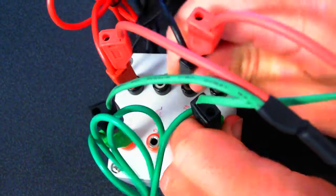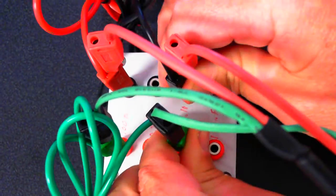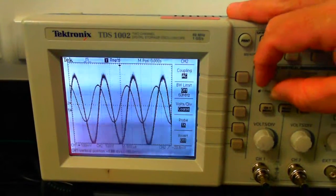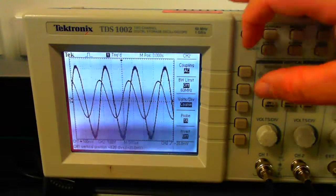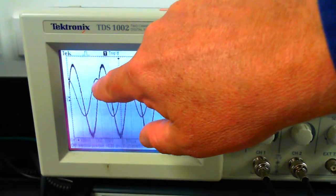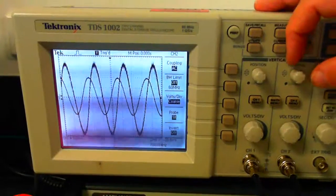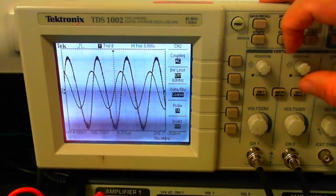If I move the probes across an inductor, again, I'll move channel 1, which is the current. And you can see that the voltage peak happens before the current peak. Therefore, voltage leads current across an inductor.